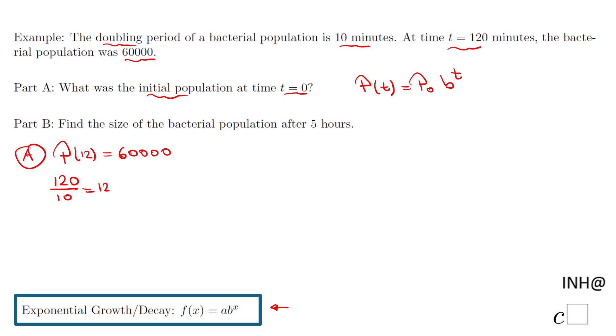which the population doubled, and we have that population of 60,000. We also know b is 2 because it's doubling. Now we can put all this information in the equation. We have P(12), which is 60,000, equals P(0) times 2 to the power of 12. So how do we find P(0)? We divide by 2 to